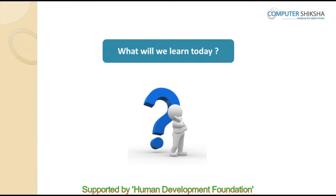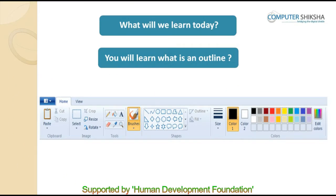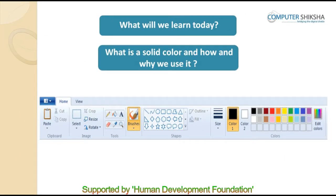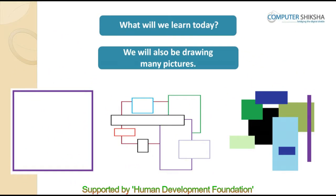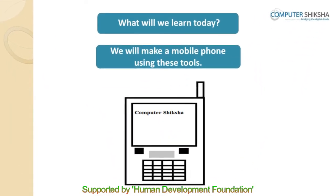Let us now begin today's class. In today's class, you will learn about the rectangle tool. You will also get to know what an outline is and how to change the color of the outline. You will also learn about what a solid color is and how and why we use it. Using outline and fill with color, we will make many pictures and at the end, we will also make a mobile phone using these tools.